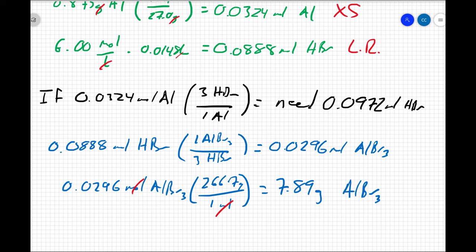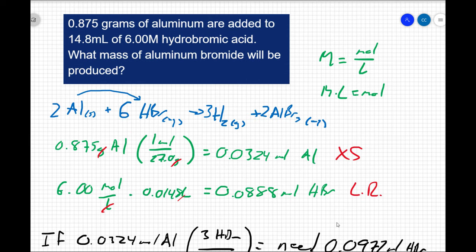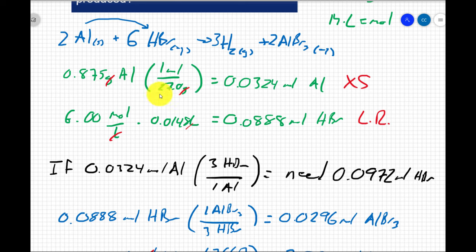So there's a lot here, but most of this is work that we've done in the past. We started out by writing a balanced equation. That was our first step. We then took our data and converted to moles. So we took the mass of aluminum and converted to moles, and then we took the concentration of the hydrobromic acid, multiplied it by its volume, making sure that our units are in liters so that they cancel out, and found the moles of my solute of HBr. So that's the new stuff.